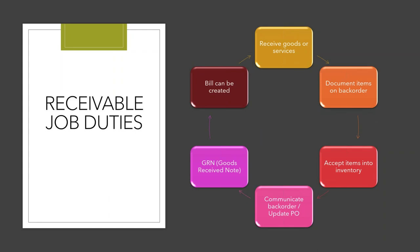Examining the receivable job tasks, we can start to create clear job duties. Number one: receive goods or services — coming off the truck or someone performing services for you. Document items on backorder, accept items into inventory if applicable, and communicate backorders so POs can be updated. There's also the GRN — goods received note — which is how you check the receipt of stock. And then lastly, create the bill. There are several job functions inside of the receivable job duties.